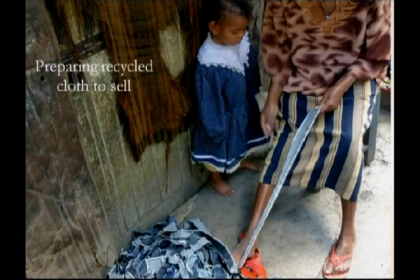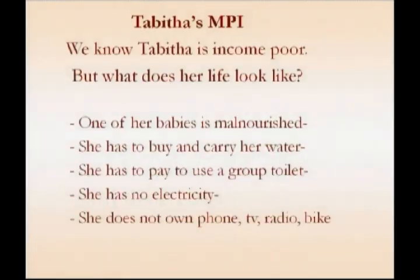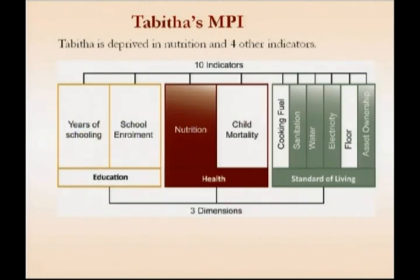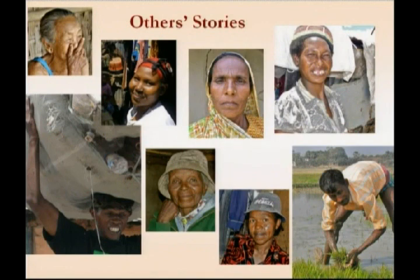Here's a person who is income poor, and our question is: what more can MPI say about her life? We found one of her six children is malnourished. She needs to buy and carry her water. She has to pay to use a toilet. They do not have electricity or the assets. In terms of the MPI, she has an intensity of poverty of 39%, less than the average intensity of Kenya which is 50%, and we can specify what those deprivations are. We did such studies in other areas and learned a great deal from these people.